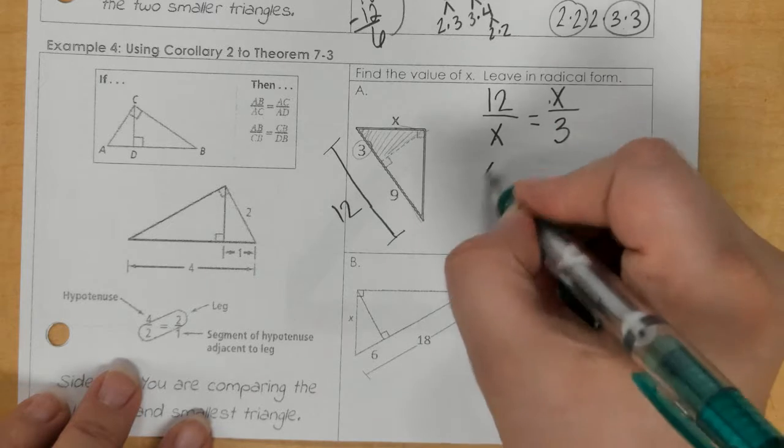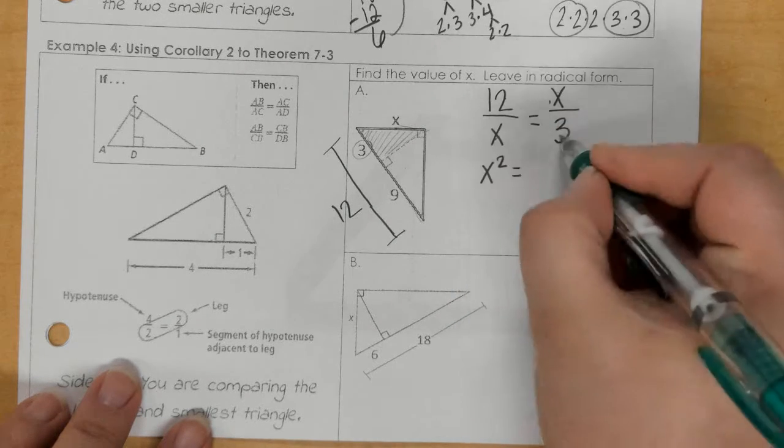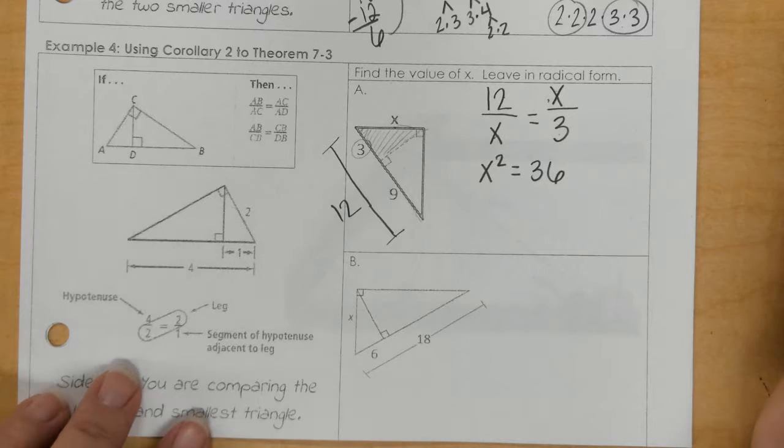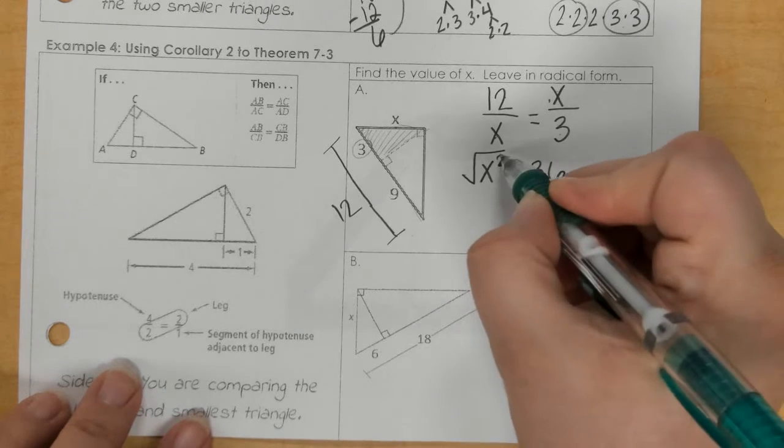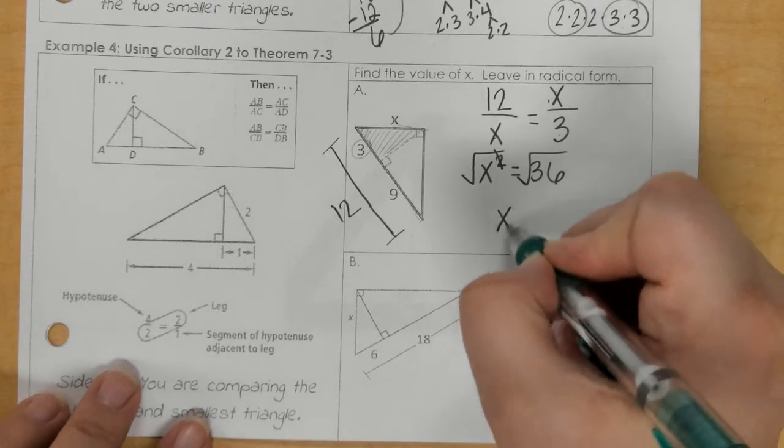And the leg of the small triangle is 3. So, x times x is x squared. 12 times 3 is 36. If I take the square root of both sides, we get 6.